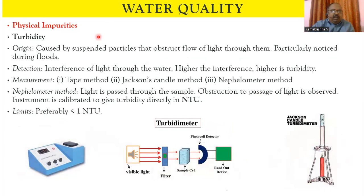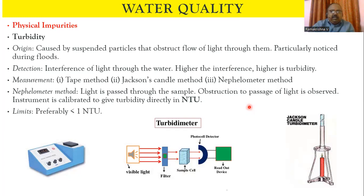Turbidity is mainly caused by suspended particles that obstruct the flow of light. When suspended particles are more, you cannot see clearly through the water — it obstructs the line of vision because of suspended impurities, meaning the optical properties are disturbed. This is particularly noticeable during floods because a high amount of suspended material is present. Detection is mainly based on interference of light through the water — higher interference means higher turbidity. There are three different methods: the tape method, the Jackson candle method, and the nephilometric method.